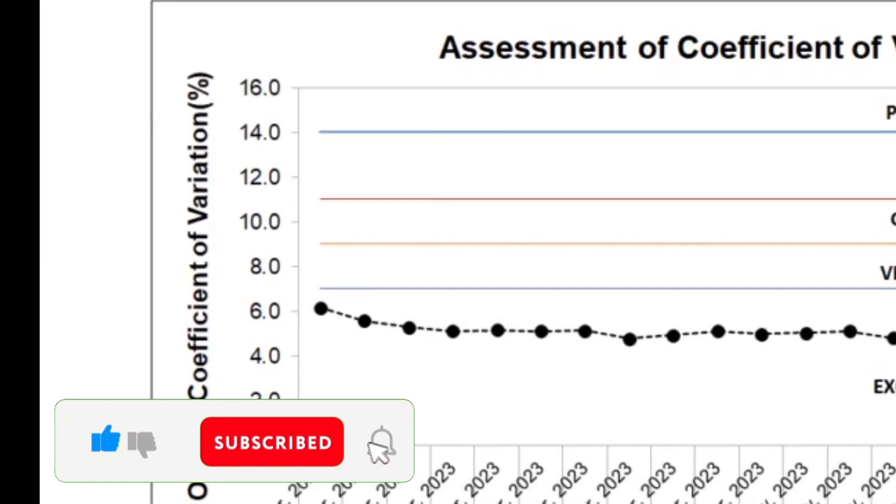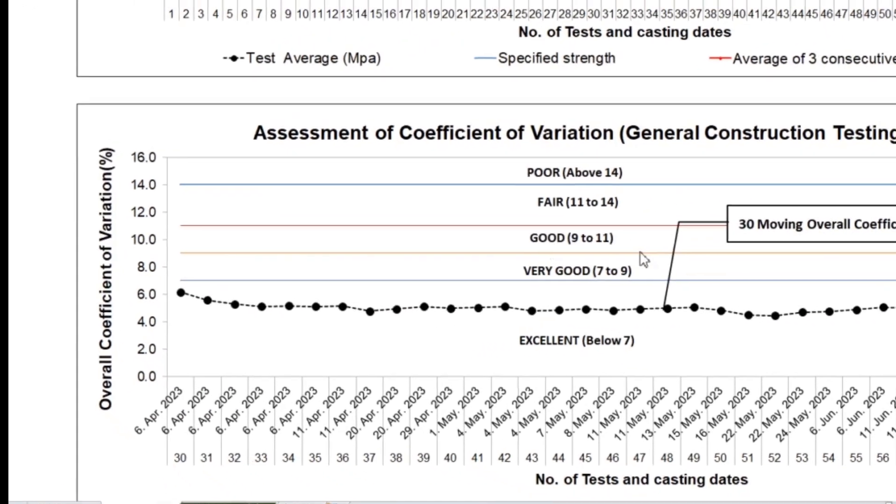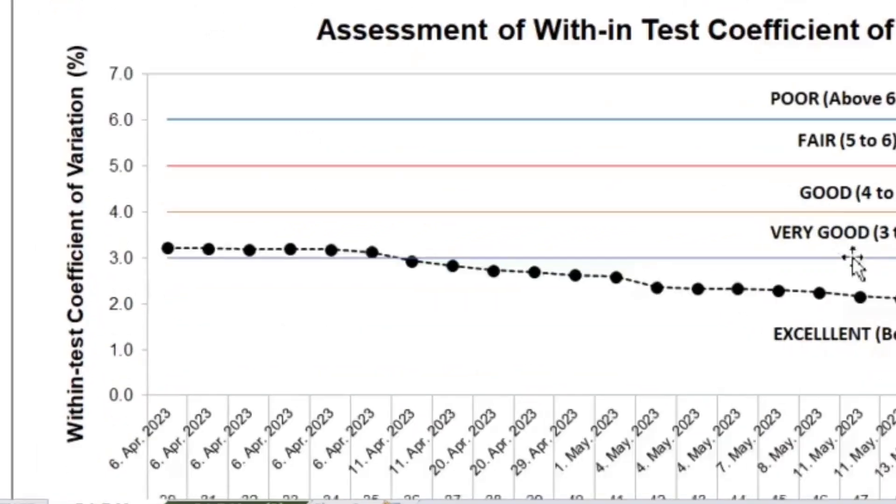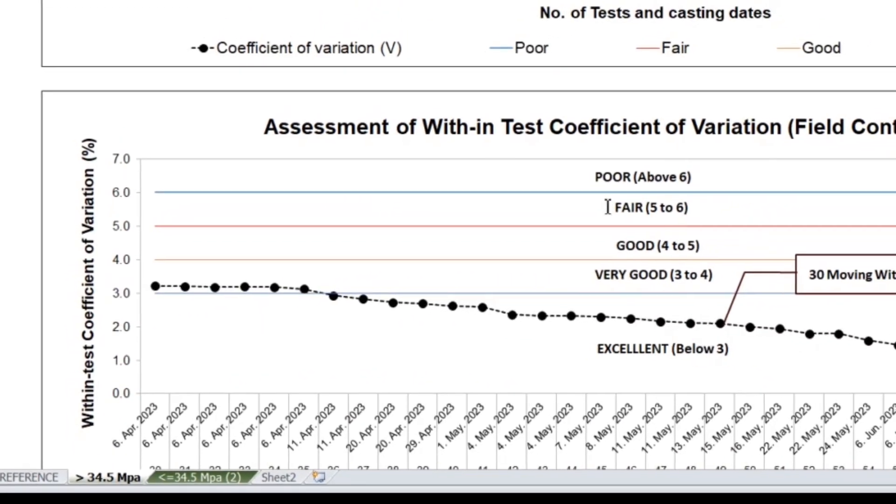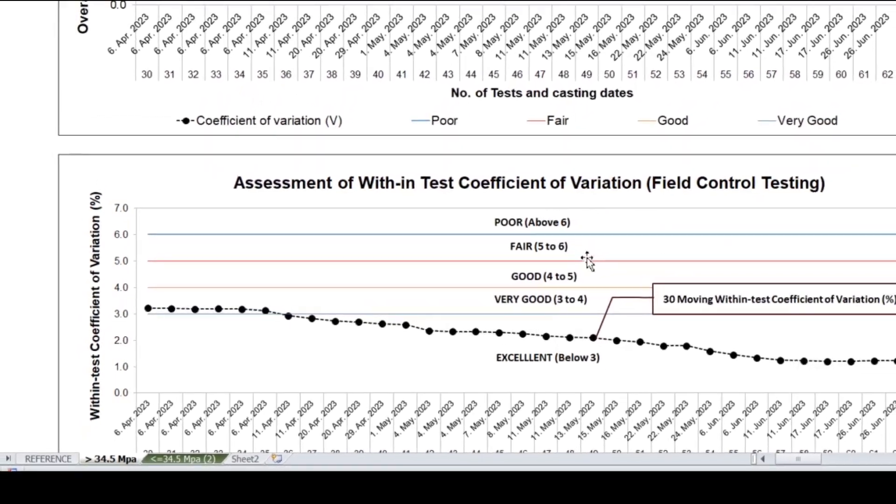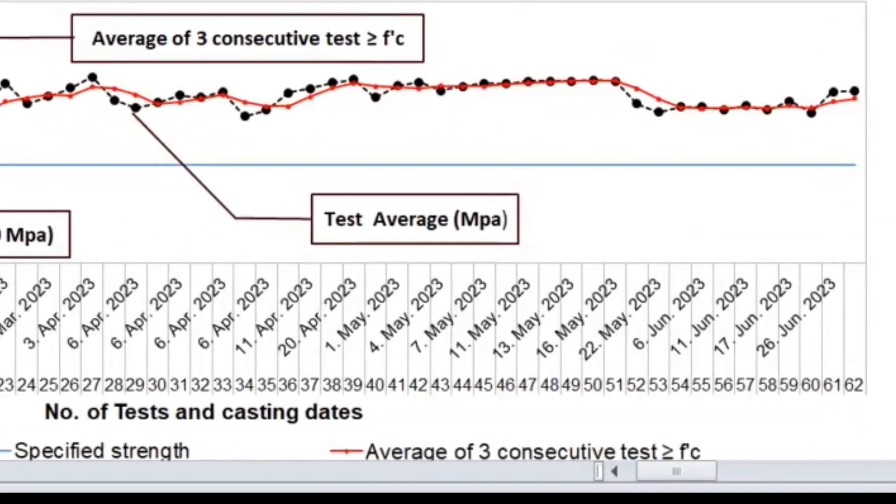This next chart shows that the coefficient of variation is consistently below 6%, which is excellent. This last chart shows the within test coefficient of variation, with a trend starting from very good to excellent, suggesting a very high degree of quality control, and we are very confident with this running mix.